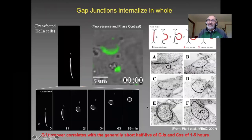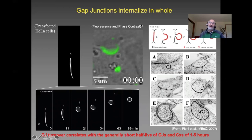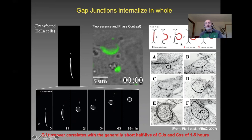Over the past years, we have carefully characterized the biosynthesis and degradation of gap junctions. And we found that gap junctions, quite unusually, are internalized as a whole into one of the two coupled cells. This results in the transfer of plasma membrane and cytoplasm from one cell to the other.